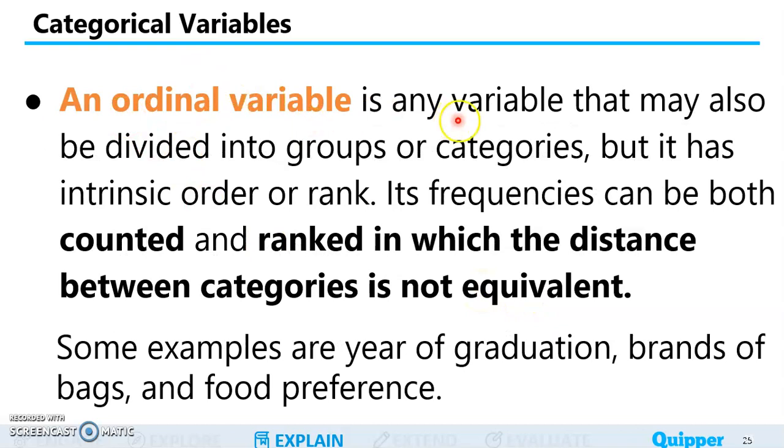An ordinal variable is any variable that may also be divided into groups or categories, just like the nominal variable, but it has intrinsic order or rank. Its frequencies can be both counted and ranked, in which the distance between the categories is not equivalent. We don't consider the distance between the categories important, but we have ranking. It should be in order.